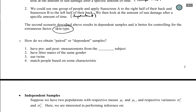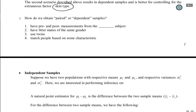How do we obtain paired or dependent samples? There are four ways: one is to have a pre and post measurement on the same subject — the most common way. Another is litter mates of the same gender, or twins. We can also match people based on some characteristic to create dependent samples. The most common scenario, however, is the pre-post comparison.